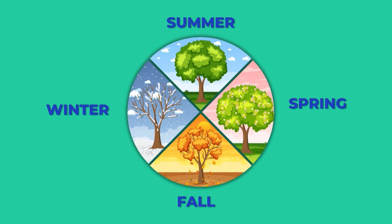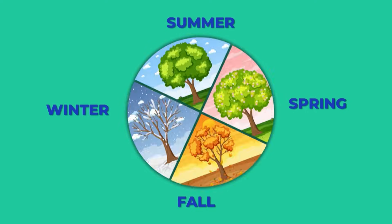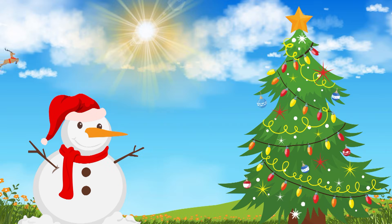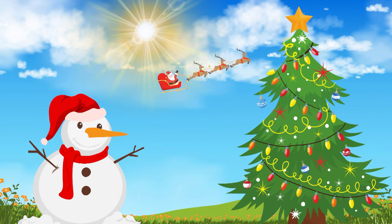So now we know what a leap year is and how the math works. But what would happen if we didn't have them? If we didn't have leap years, then the calendar and seasons would get out of whack. It would take hundreds of years, but eventually we'd end up having summer weather during Christmas and snow in July.